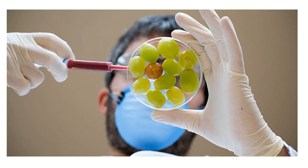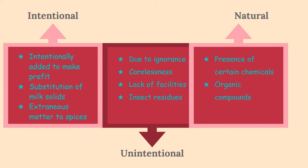Let's discuss them one by one with the help of examples. Intentional adulteration is usually done to make profit, or sometimes people do it without knowing how hazardous it could be. Some examples include substitution of milk solids or extraneous matter to spices. Unintentional adulteration takes place due to ignorance, carelessness, lack of facilities, or insect residues.